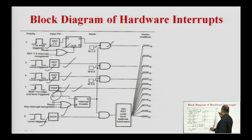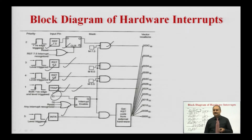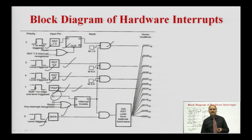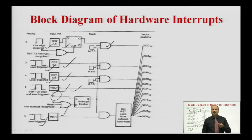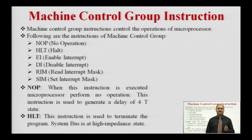The vector address of the corresponding interrupt identifies where the interrupt service routine is present. The vector address of INTR is generated by or given by the interrupting device. With the help of the vector address, we can identify where the interrupt service routine is present, and the processor executes the interrupt service routine corresponding to that unique vector address.